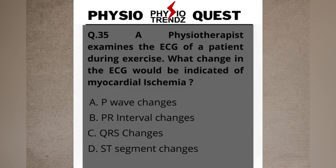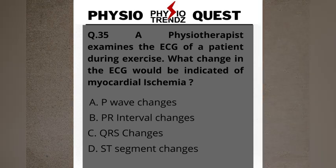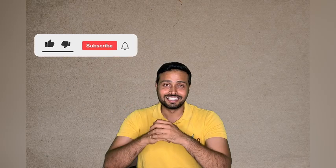The first question asked this week goes like this: a physiotherapist examines the ECG of a patient during exercise — what changes in the ECG would be indicative of myocardial infarction? Options given are: Option A, P wave changes; Option B, PR interval changes; Option C, QRS changes; and Option D, ST segment changes.